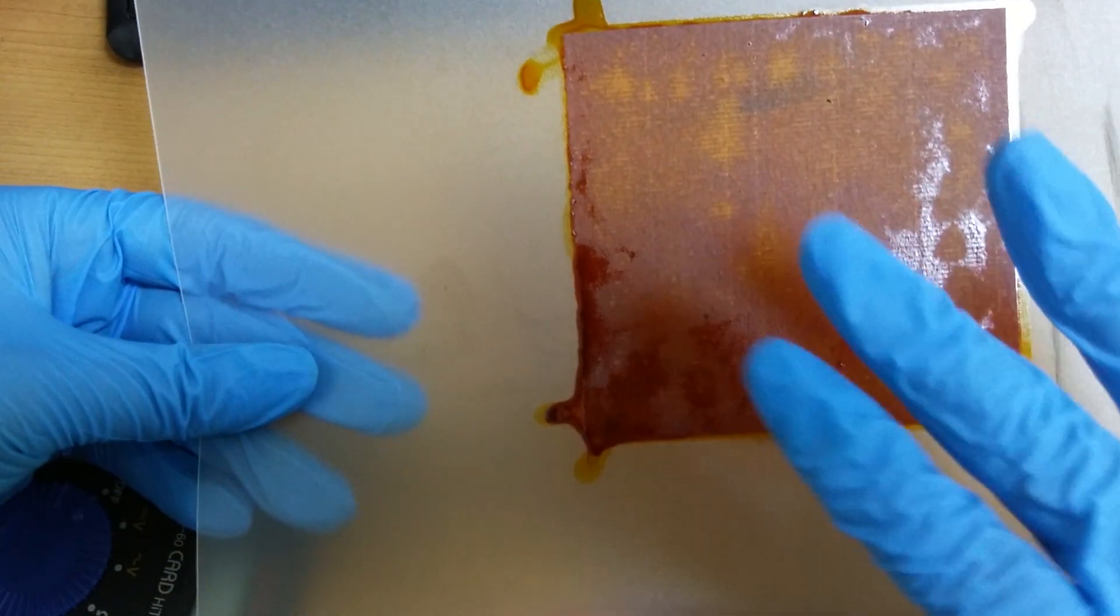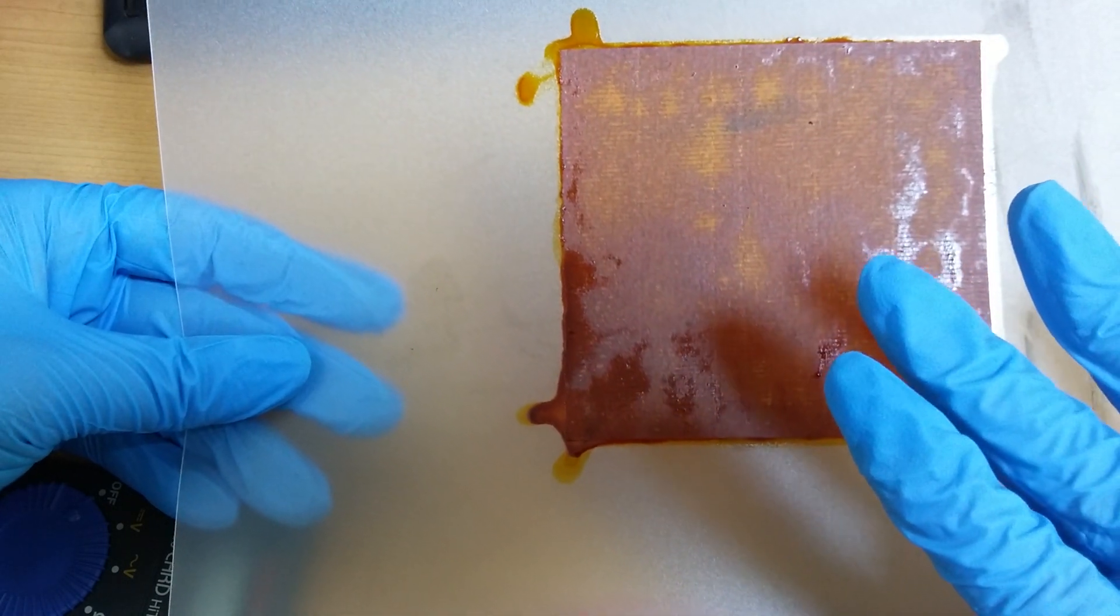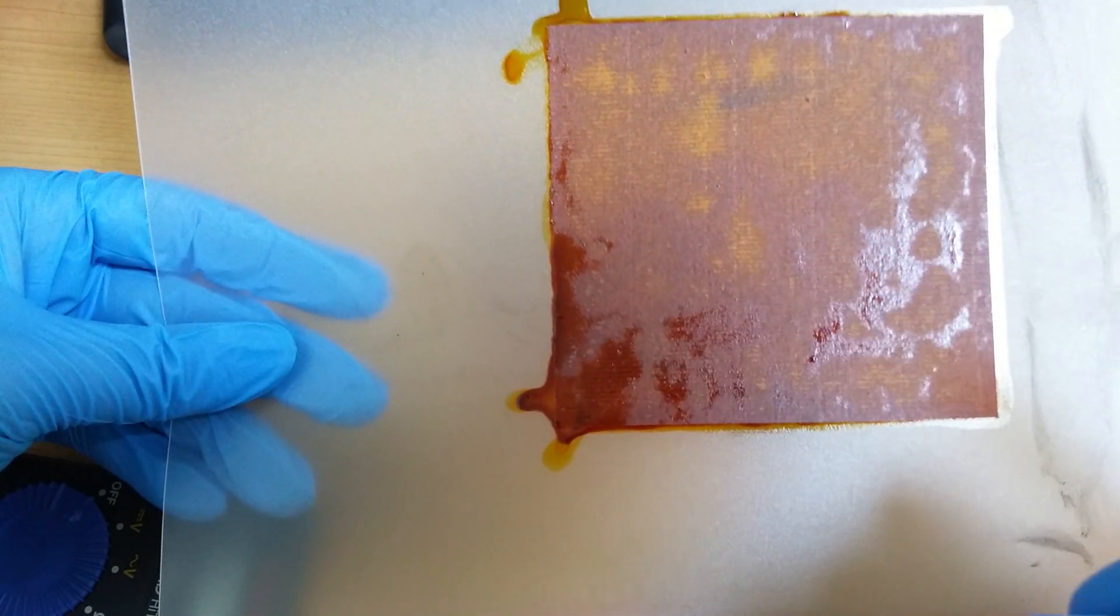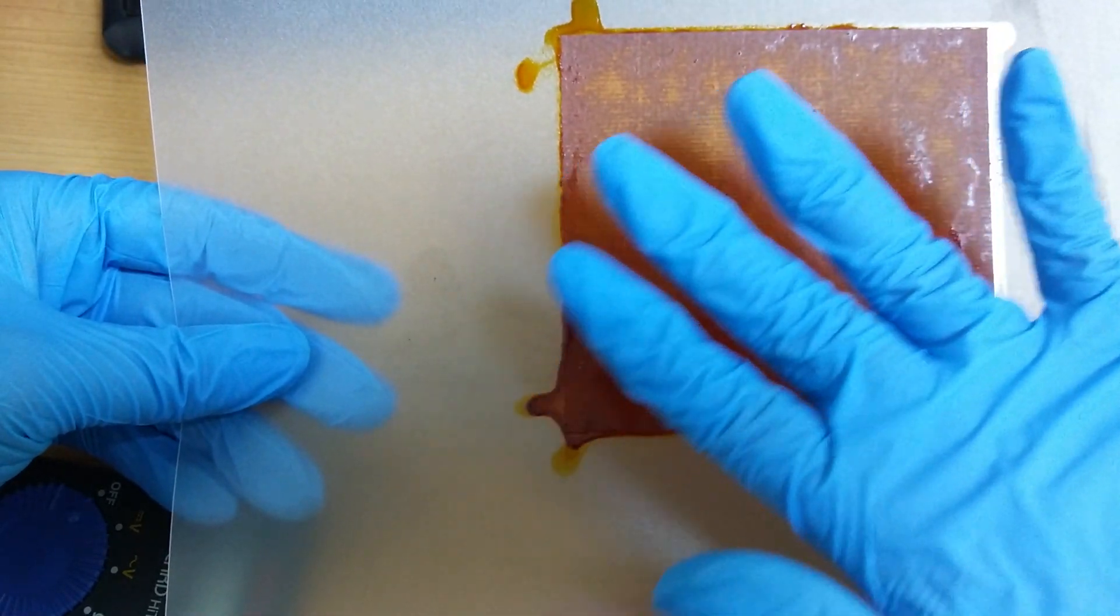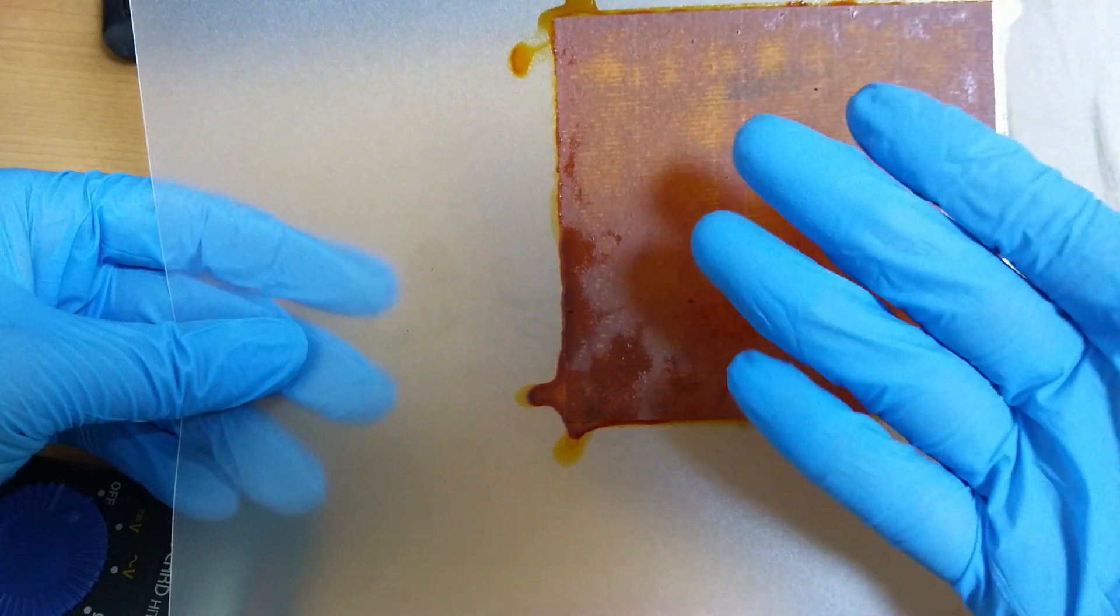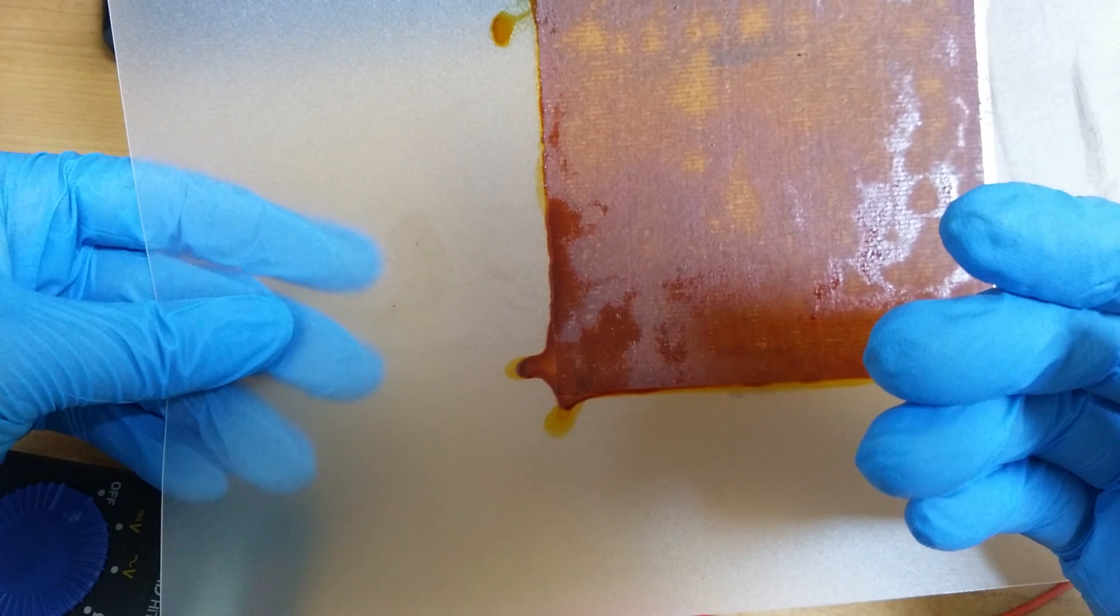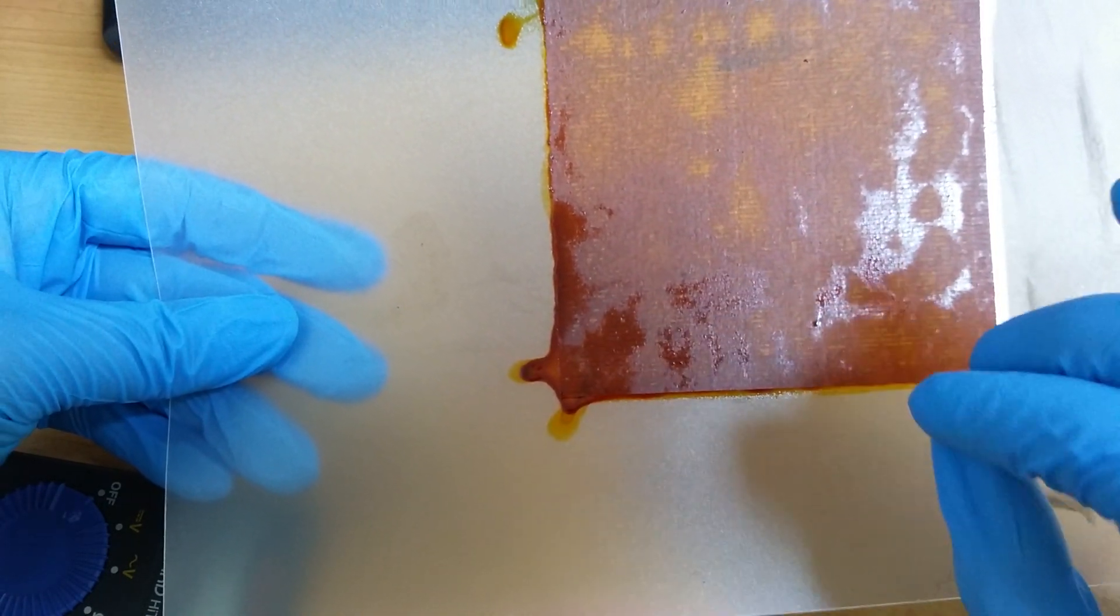By the way, this is iodine. This is paper and iodine. One side I will coat with iodine and the other side I will coat with graphene. And I will try to make a solid-state battery.